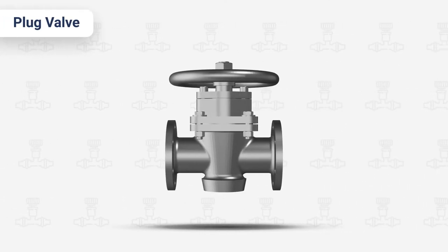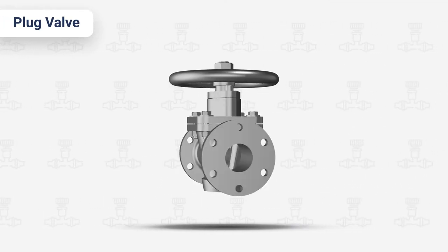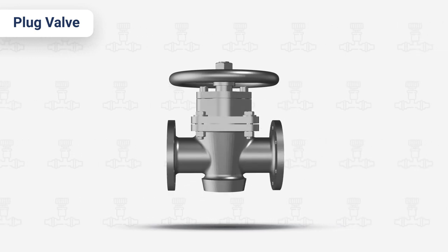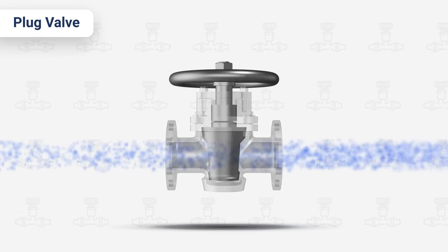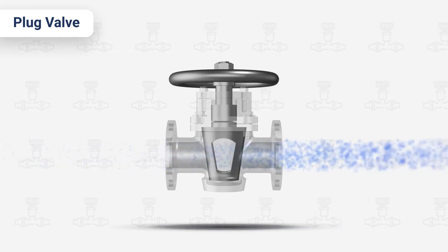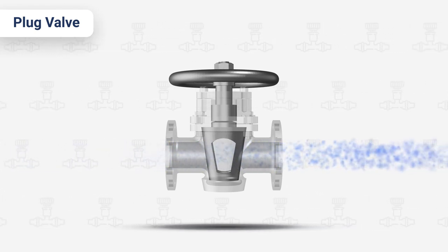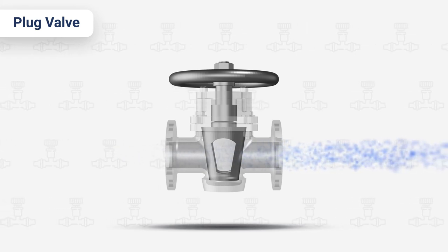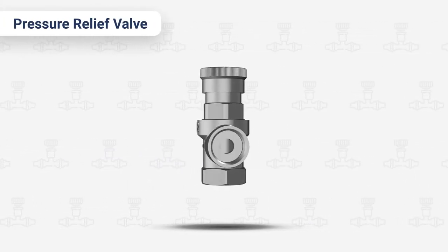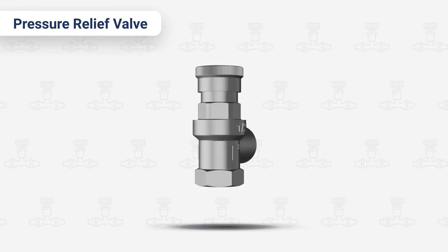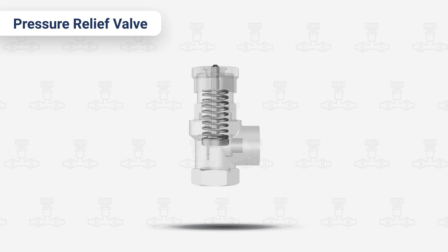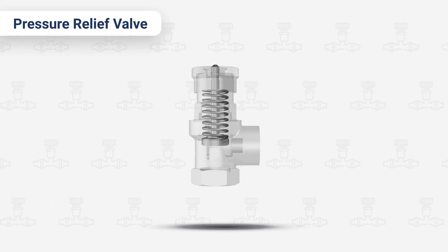Plug valve. Using a quick-acting quarter-turn valve handle, these valves control flow using tapered or cylindrical plugs. They provide some of the best ratings when tight shut-off is essential and are reliable in high-pressure or high-temperature environments. Pressure relief valve. Used to help improve safety, these valves are spring automated and will help to return a system to the desired pressure during overpressure events.